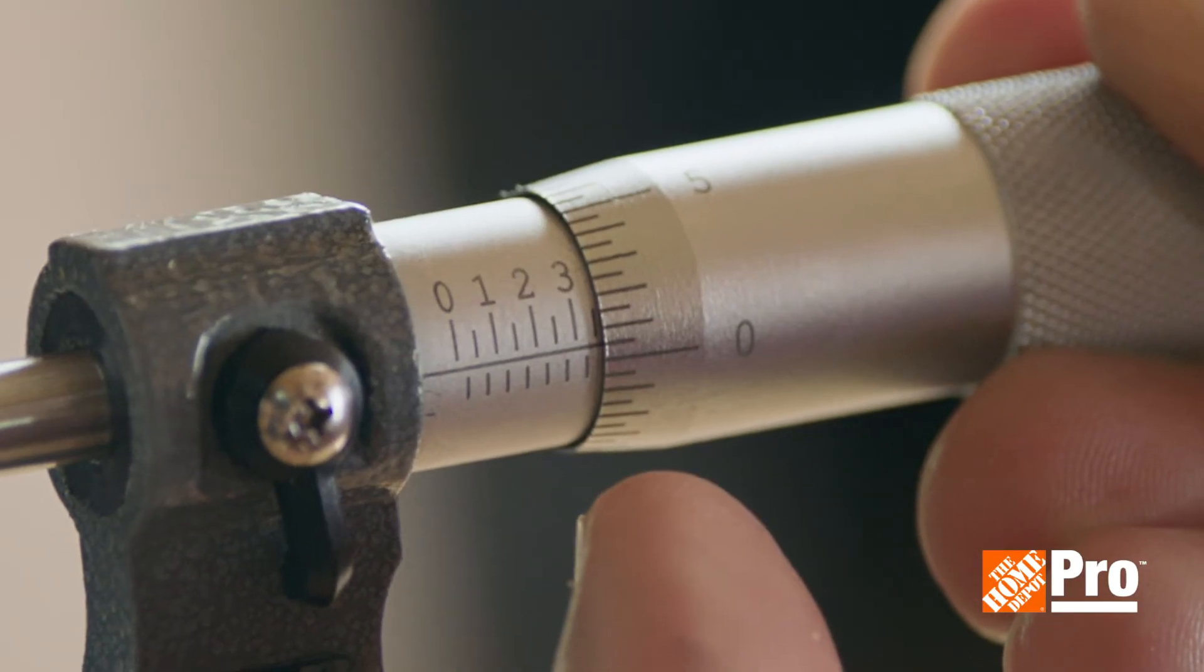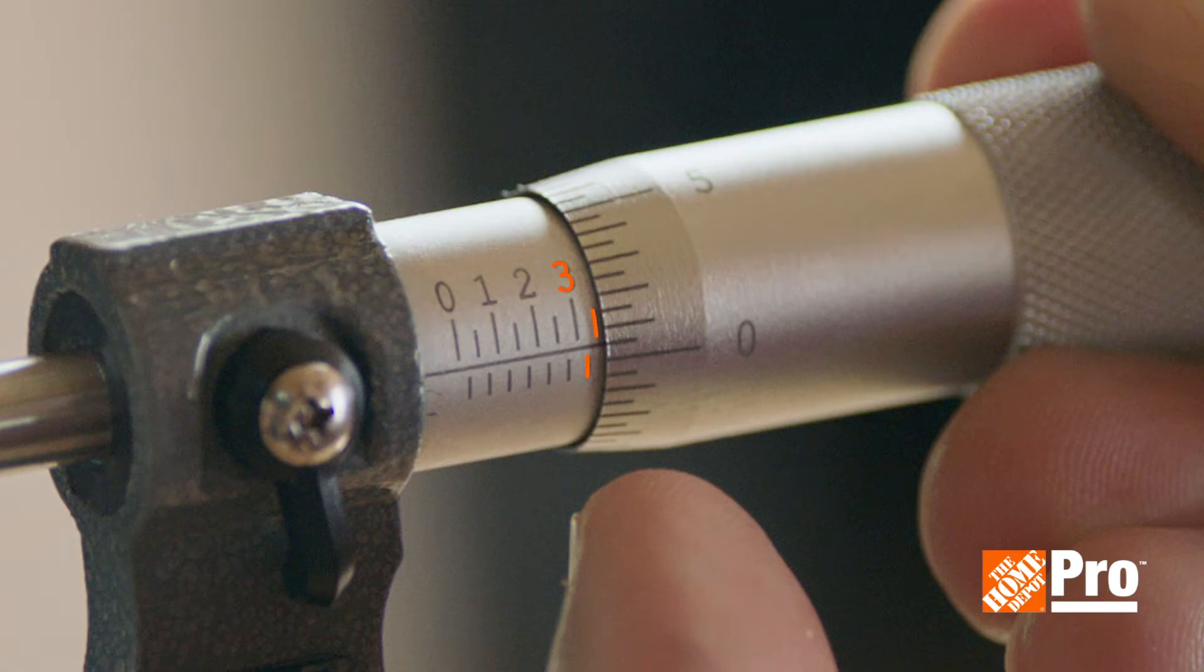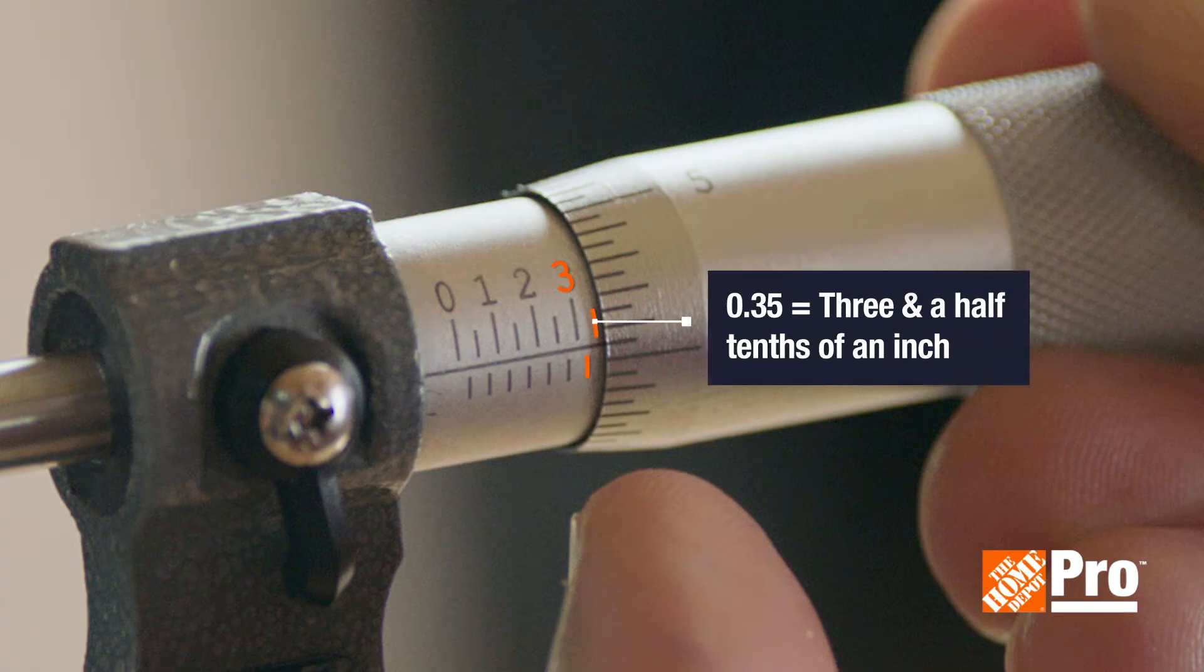Our sleeve is showing the whole number 3 and 2 of the quarter marks, which give us 0.35 or three and a half tenths of an inch.